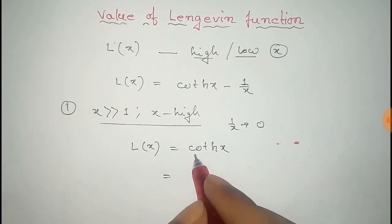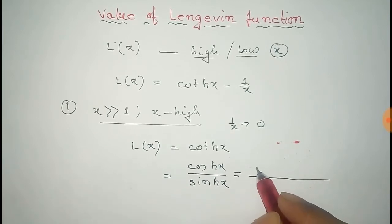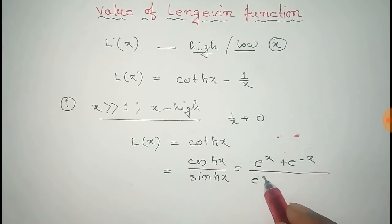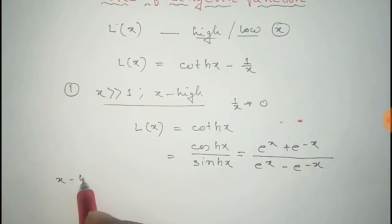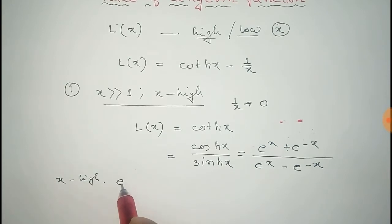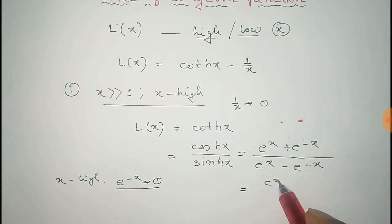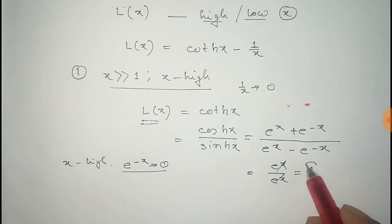Now, coth(X) can be written as cosh(X) divided by sinh(X), which equals (e^X + e^{-X}) divided by (e^X − e^{-X}). For X tending to high, e^{-X} tends to 0. Substituting this, we get e^X divided by e^X, which equals 1. Thus, the value of the Langevin function for X very, very greater than 1 is 1.